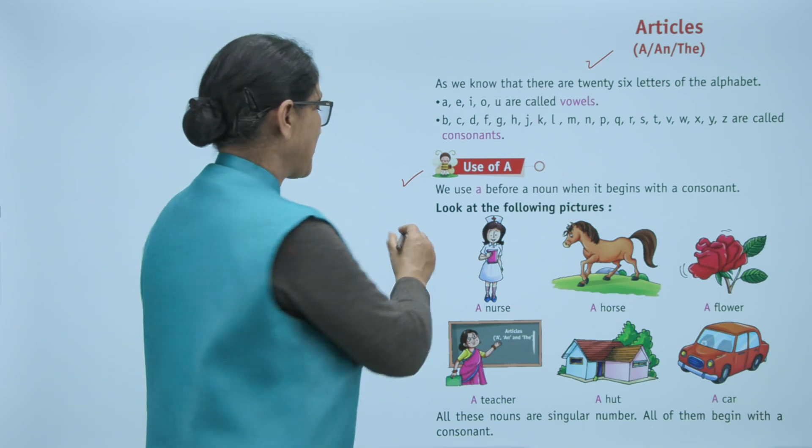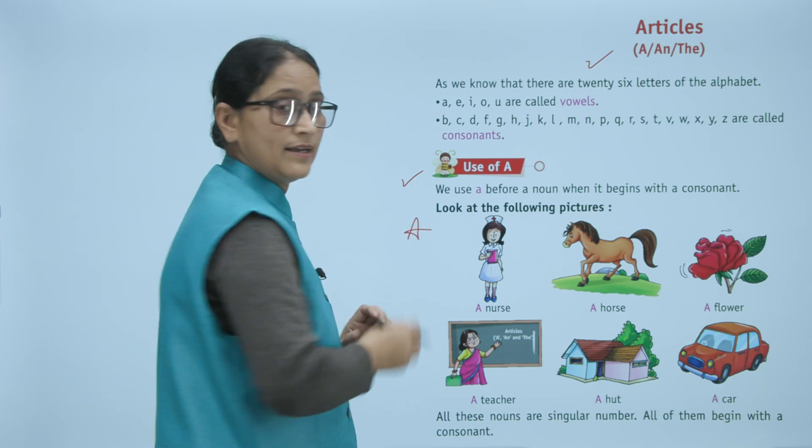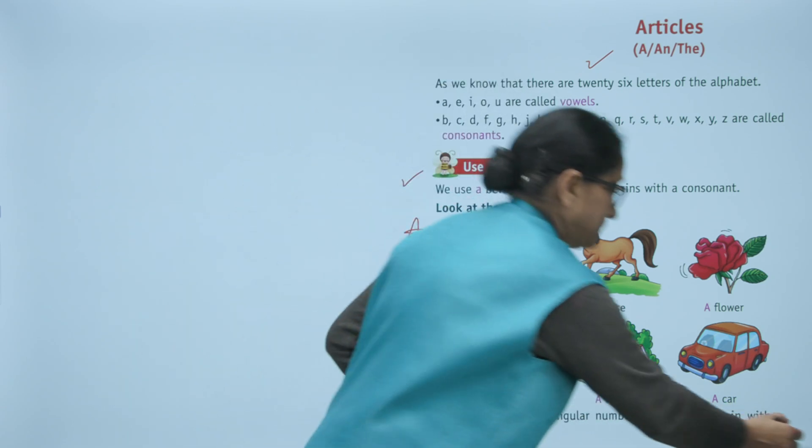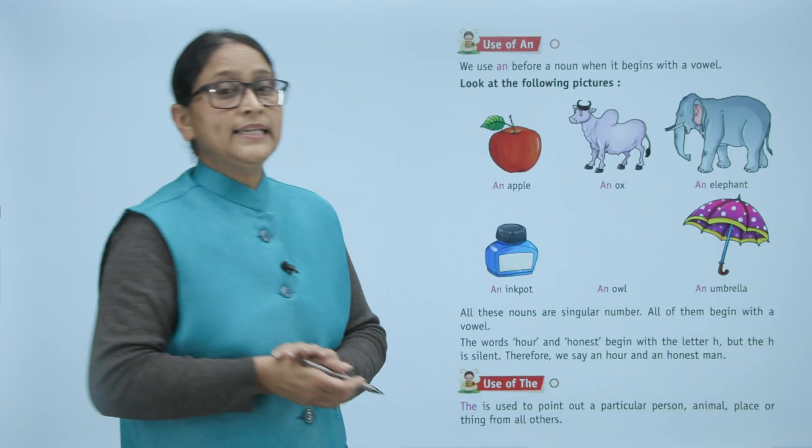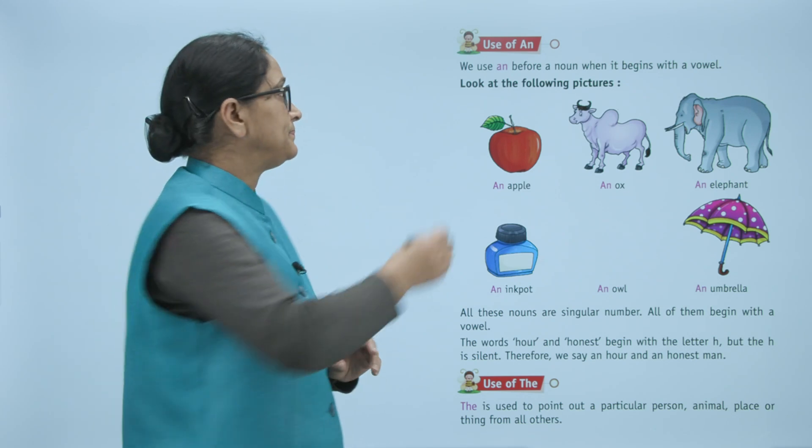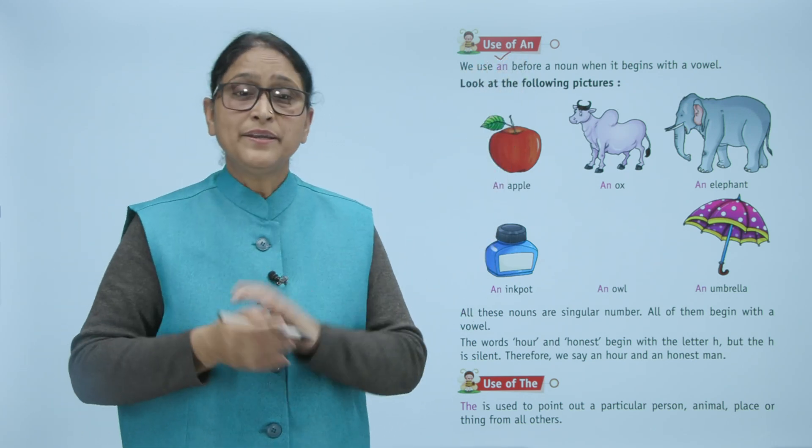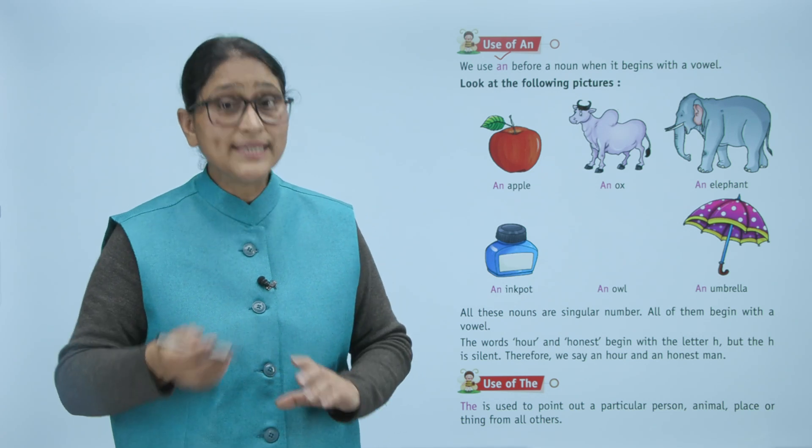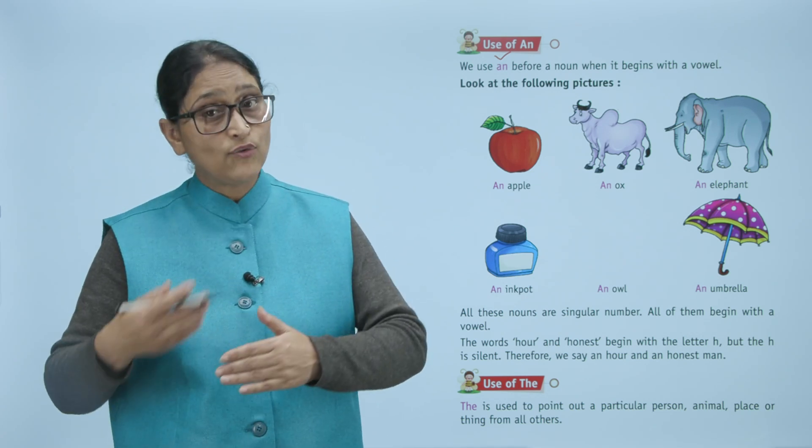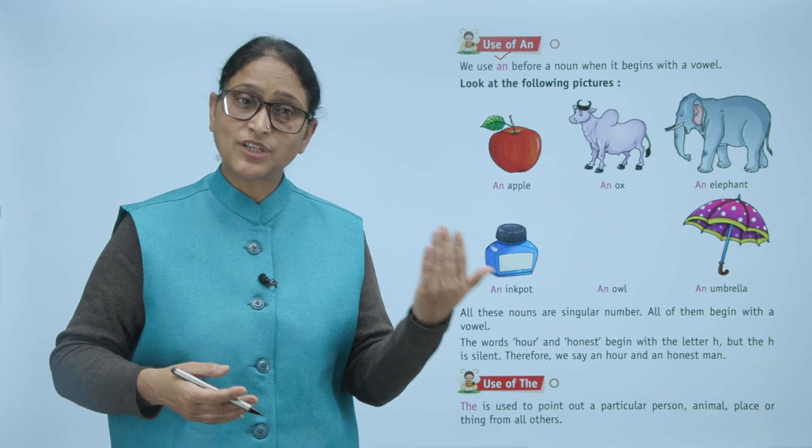Now use of 'an': we use 'an' before a noun when it begins with a vowel. Agar vowels se shuru ho raha noun, to kis ka use karenge? 'An'.